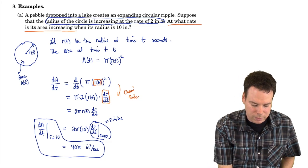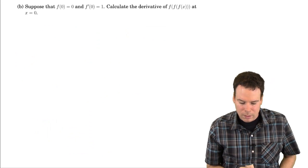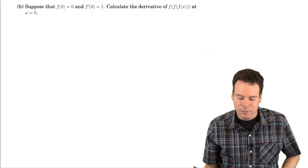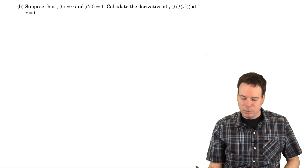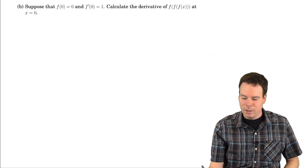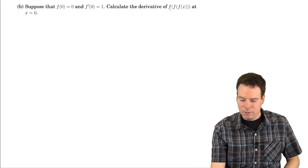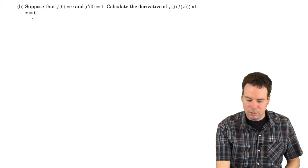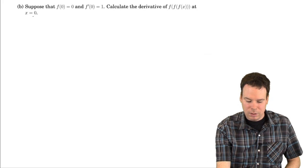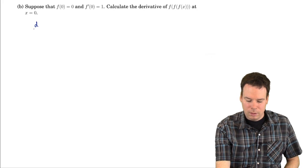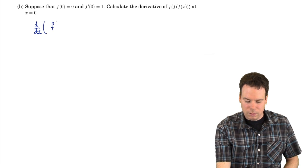Let's have a look at another example. Suppose that f(0) = 0 and f'(0) = 1. Let's calculate the derivative of f composed of f composed of f at x, at the particular place x equals 0. So what is this derivative — f composed with itself three times?